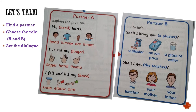It's time to practice. Find a partner, choose the role A and B, and act out the dialogue. For example, you will do the dialogue with your sister or brother — you become A and your sister becomes B. I've cut my finger. Shall I bring you a plaster? Yes please.